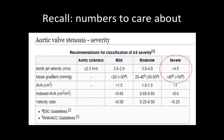As a reminder of the numbers that we care about for distinguishing severe aortic stenosis, we classify severe aortic stenosis as having a maximal velocity of over 4 meters per second and/or a mean gradient of over 40 millimeters of mercury. We have not discussed the use of the continuity equation to obtain an aortic valve area in this podcast, but generally an aortic valve area of less than 1 cm² is also considered severe.